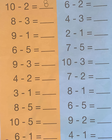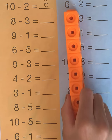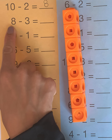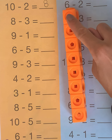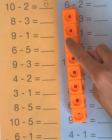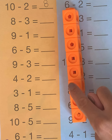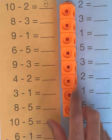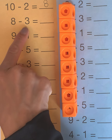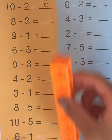Our next problem is 8 minus 3. So we're starting off with 8 cubes: 1, 2, 3, 4, 5, 6, 7, 8. And we want to take away 3: 1, 2, 3.